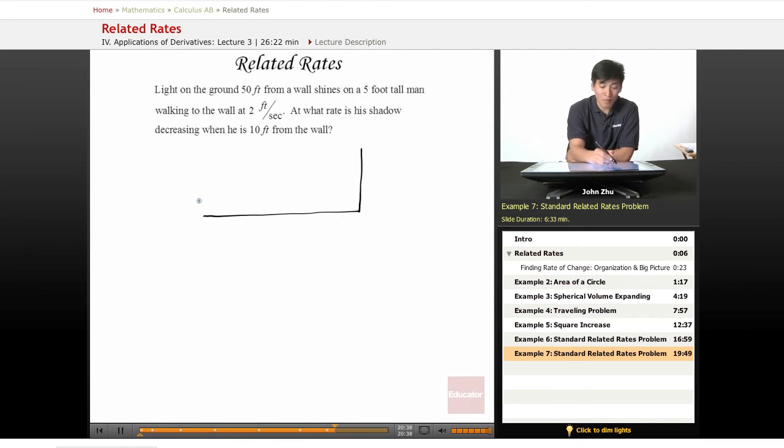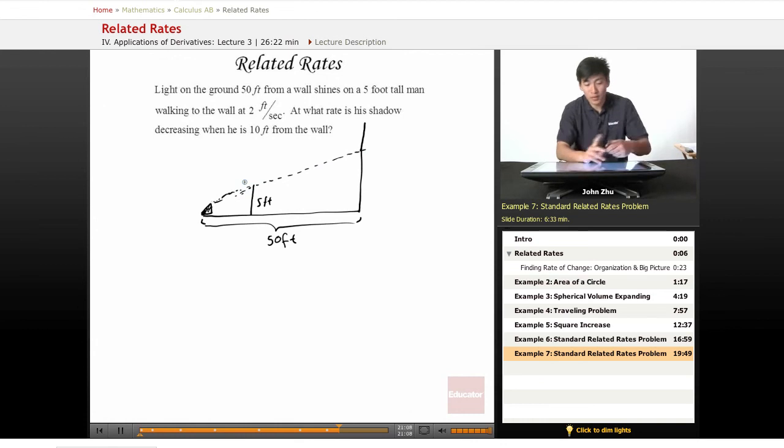Light on the ground 50 feet from a wall. So here's the light, 50 feet from the wall. It shines on a five foot tall man. So here's our five foot tall man. It shines his shadow onto the wall. Here's the wall, really, really, really tall, negligibly tall.